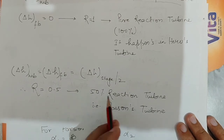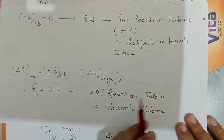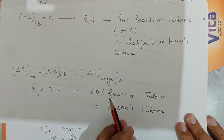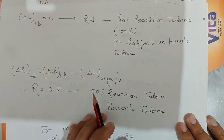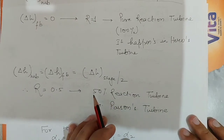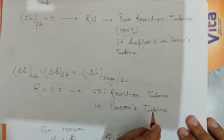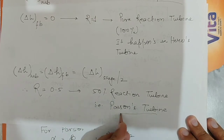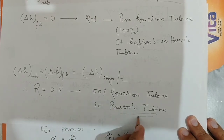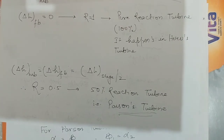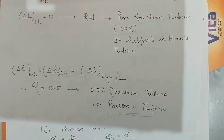A 50% reaction turbine means the reaction turbine whose degree of reaction is 50%. That turbine is called the Parsons turbine, which is mostly used in our syllabus and has a 50% degree of reaction.